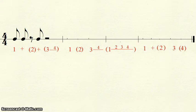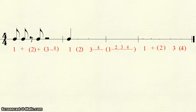Measure 2 begins with a single beat 1, meaning a quarter note. Beat 2 is by itself in parentheses, therefore a quarter rest. We now see beat 3, a line, and beat 4 on the line — a 2-beat note, or a half note.